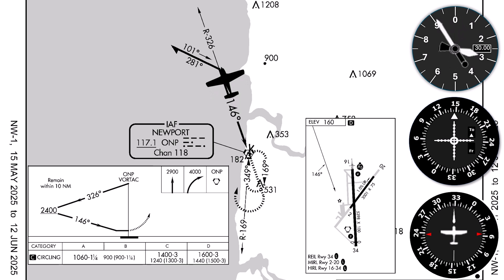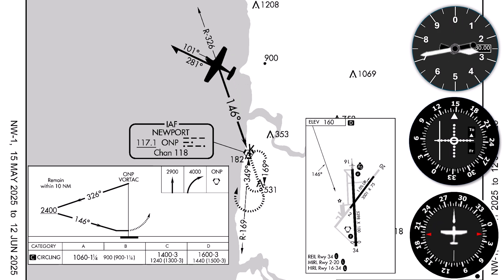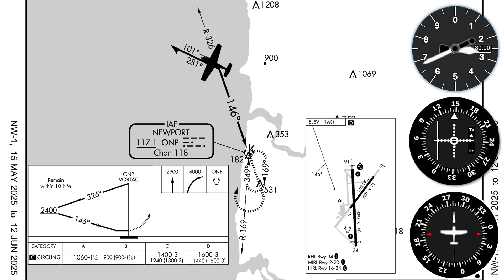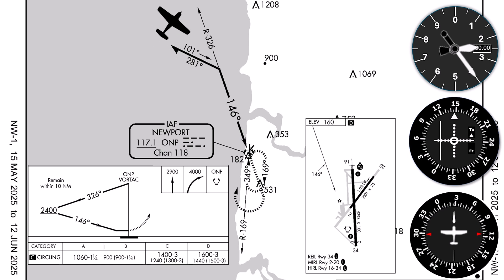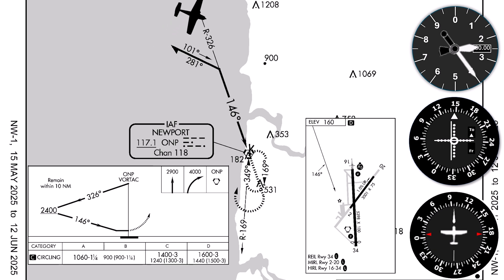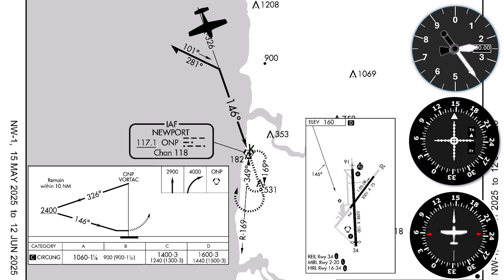For the procedure turn, we'll first turn to 281 and start timing one minute. We've already got the inbound course of 146 set up. After the minute, we make a turn to 101. Meanwhile, we level off at 2,400 as we roll out on 101 degrees. This is a 45-degree intercept heading for the approach course, which we intercept and fly inbound.